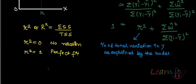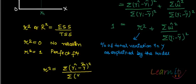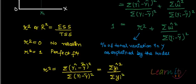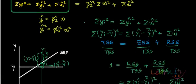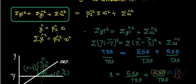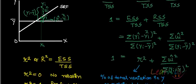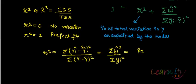R square is equal to the summation of (Ŷi minus Ȳ) squared upon summation of (Yi minus Ȳ) squared. You can also write this as summation of Ŷi squared upon summation of Yi squared. From our earlier recording, summation of Ŷi squared can be written as beta2hat squared into summation of Xi squared.